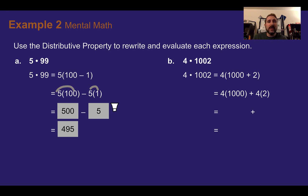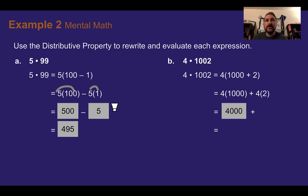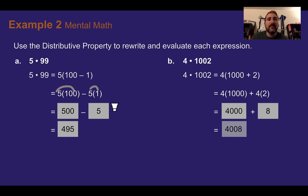Now let's look at part b: 4 times 1,002. So 1,002 is really just 1,000 plus 2. We can use the distributive property: 4 times 1,000 is 4,000, and 4 times 2 is 8. So together, adding, we would get 4,008. The distributive property helps make these mental calculations a little bit simpler.